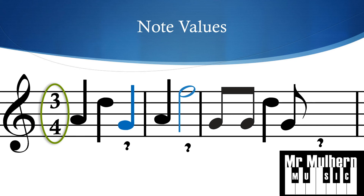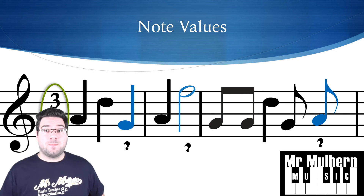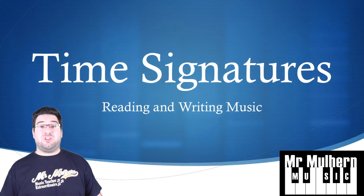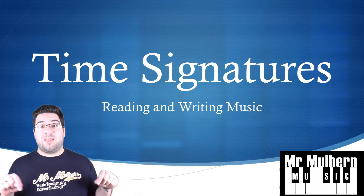Let's look at our last bar. The first note is a quaver — half a beat — then another quaver, another half beat, so we've got one beat so far with those two quavers. Then we've got a crotchet, so we've got two beats now. Then we've got one more quaver, so we've got two and a half beats. We need it to add up to three, so we only need to find half a beat more — that means we need one more quaver.